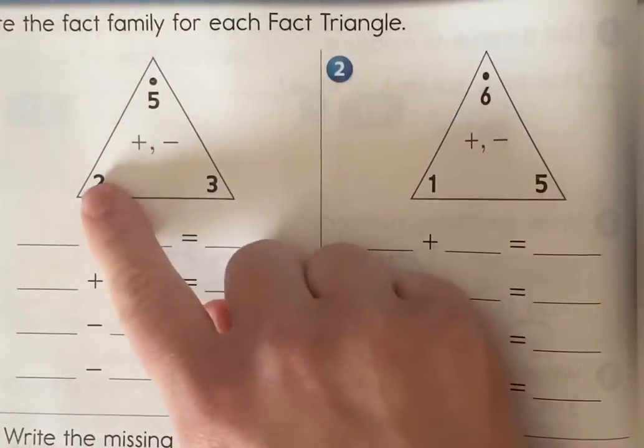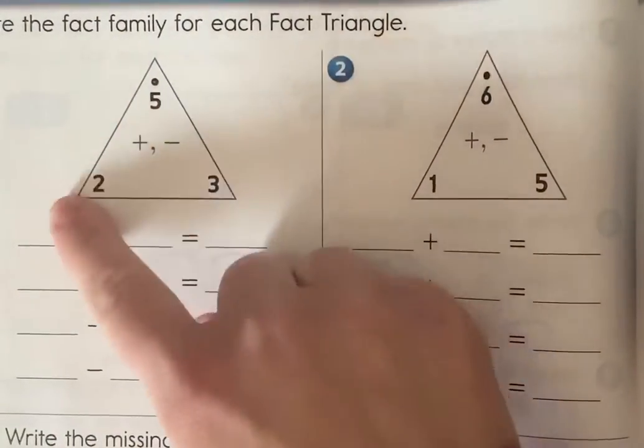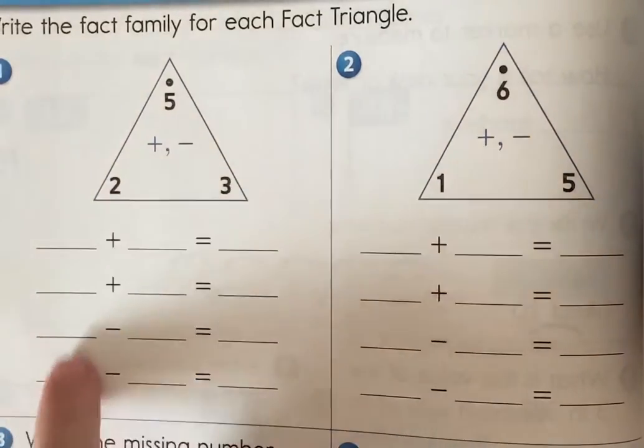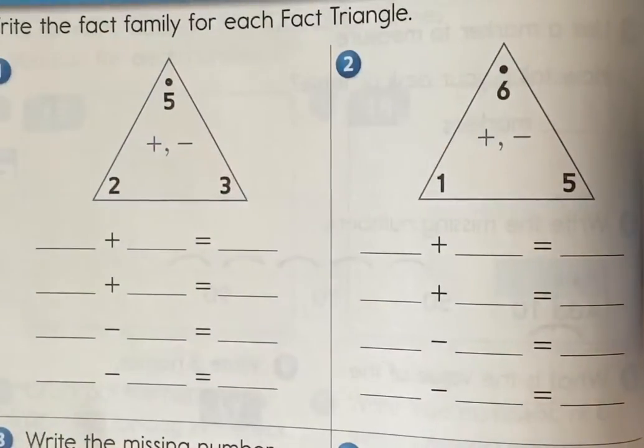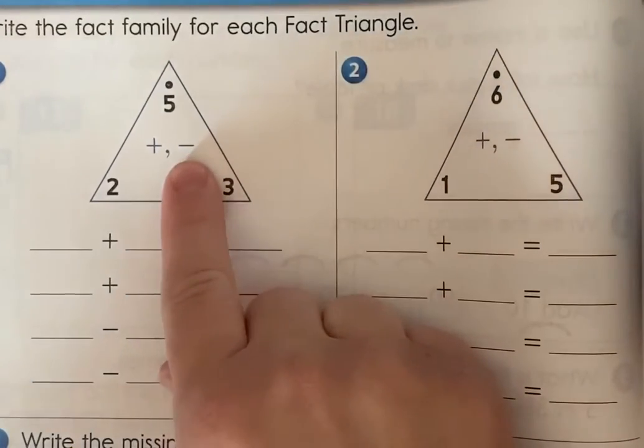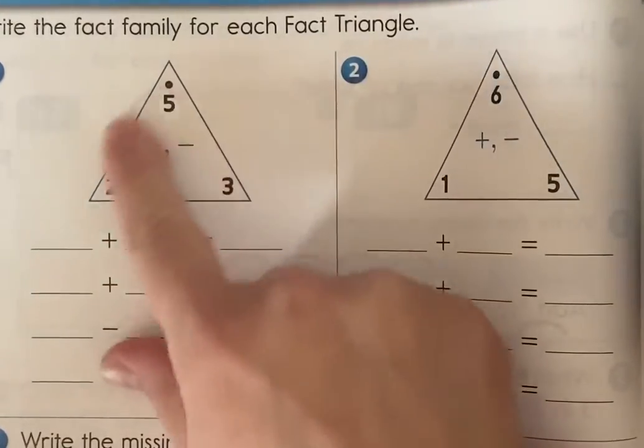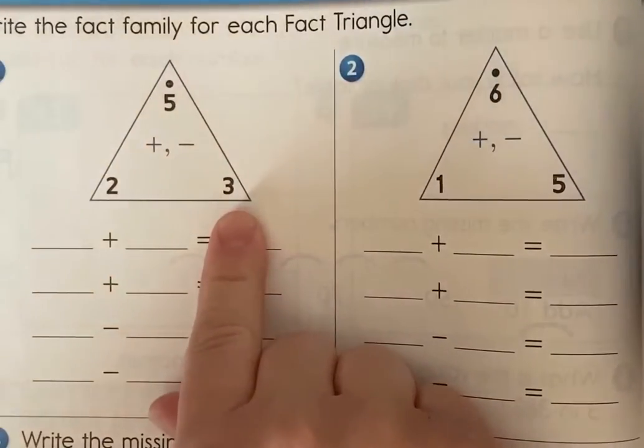So the two, three, and five are all in a fact family together. That means we can come up with four number sentences that go with those numbers. And the plus and the minus in the middle just shows that we can do addition and subtraction with all three of these numbers.